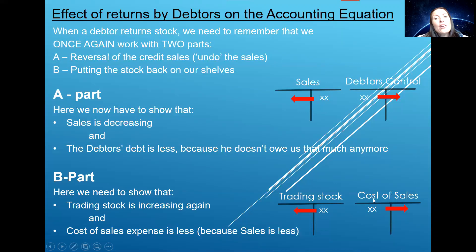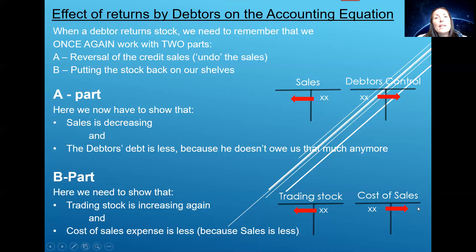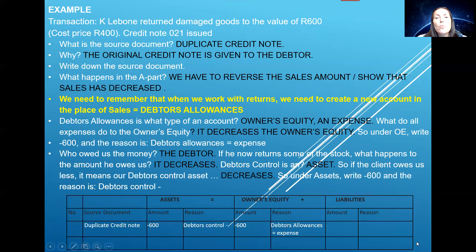Now some of the stock has been returned by the debtor, so it means my cost of sales expense also has to decrease. When an expense decreases, I obviously will have to write on the credit side of that account. The net effect is that my owner's equity will increase. So that's just a short summary — let's move on to the more full explanation.